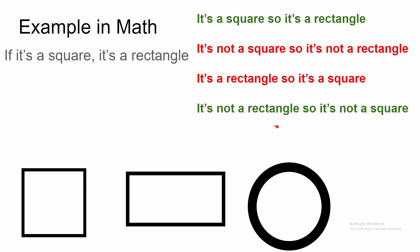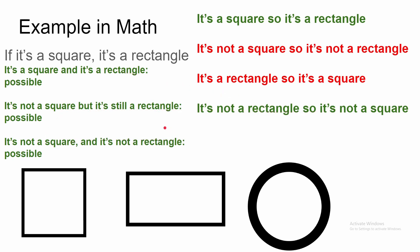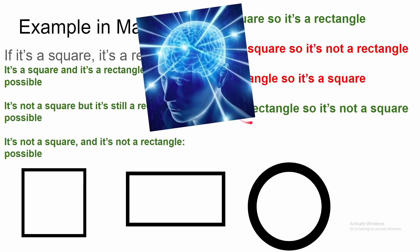But you can say it's not a rectangle, so it's not a square. If it's not a rectangle, then it cannot be a square, because if it were a square, then it would also be a rectangle. There are three possible scenarios given this implication: either it is a square and it's also a rectangle; or it is not a square but it is still a rectangle; or it is not a square and it's also not a rectangle. If you know it's a square, that crosses out the other two possibilities, so it must be a rectangle. If you say it's not a rectangle, then the only possibility is it's not a square. In an implication, A implies B — anything is possible except the scenario where A is true and B is not true. So if B is not true, then you know that A is not true.